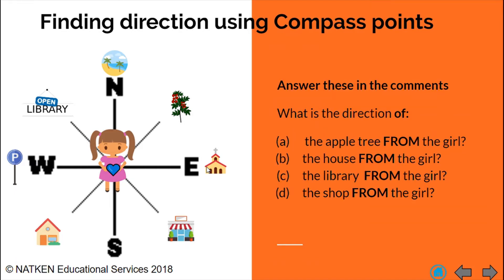Let's try some more. What is the direction of the apple tree from the girl? Again, we are starting from the girl. What direction would the girl need to go in order to get to the apple tree? We can see the apple tree up here — using our knowledge of the eight-point compass, we know that the girl would need to go in a northeast direction in order to get to the apple tree.